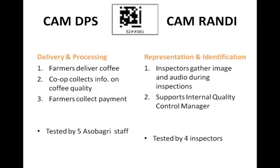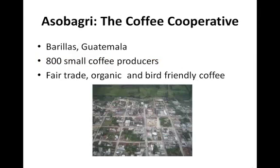The two applications were tested at a coffee cooperative called Azobagri, located in Barillas, Guatemala. Azobagri monitors the coffee production process from soil care and seeding all the way to its exportation. There are different international certifications and standards that the 800 small coffee producers have to meet.